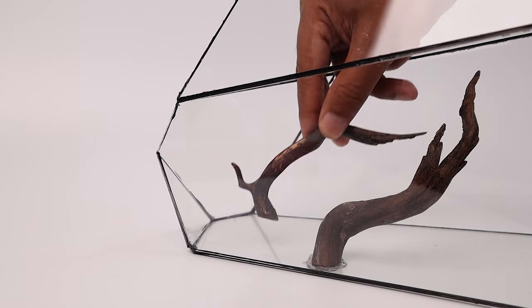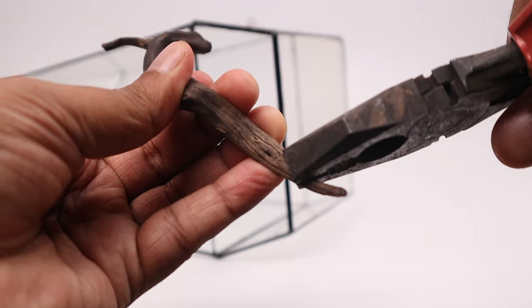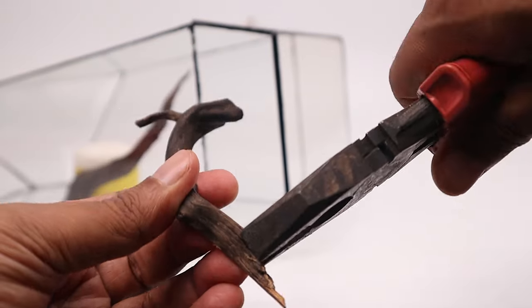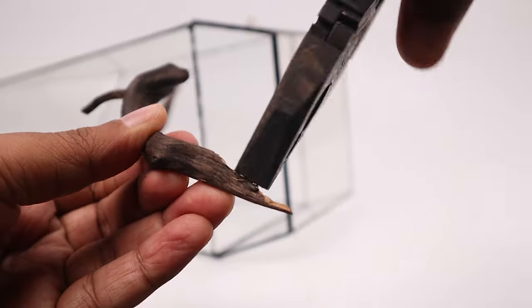I proceed with attaching the second piece of wood. I break one end of the wood to shorten it a bit. I try my best to make the broken end look as natural as possible.